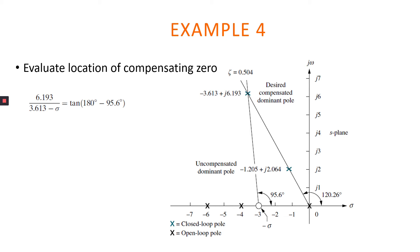Based on the previous calculation to evaluate the location of compensating zero, we have negative 3.006. So our ZACC is here.